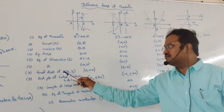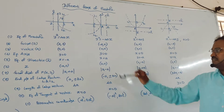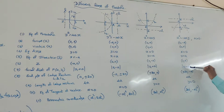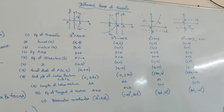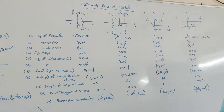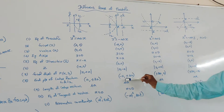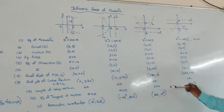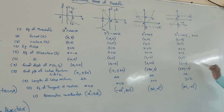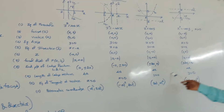The focal distance of the point (x₁, y₁): for the four forms it is |x₁ + A|, |x₁ − A|, |y₁ + A|, and |y₁ − A| respectively. The endpoints of the latus rectum: first case (A, ±2A), second case (−A, ±2A), third case (±2A, A), fourth case (±2A, −A). The length of the latus rectum is always 4A.